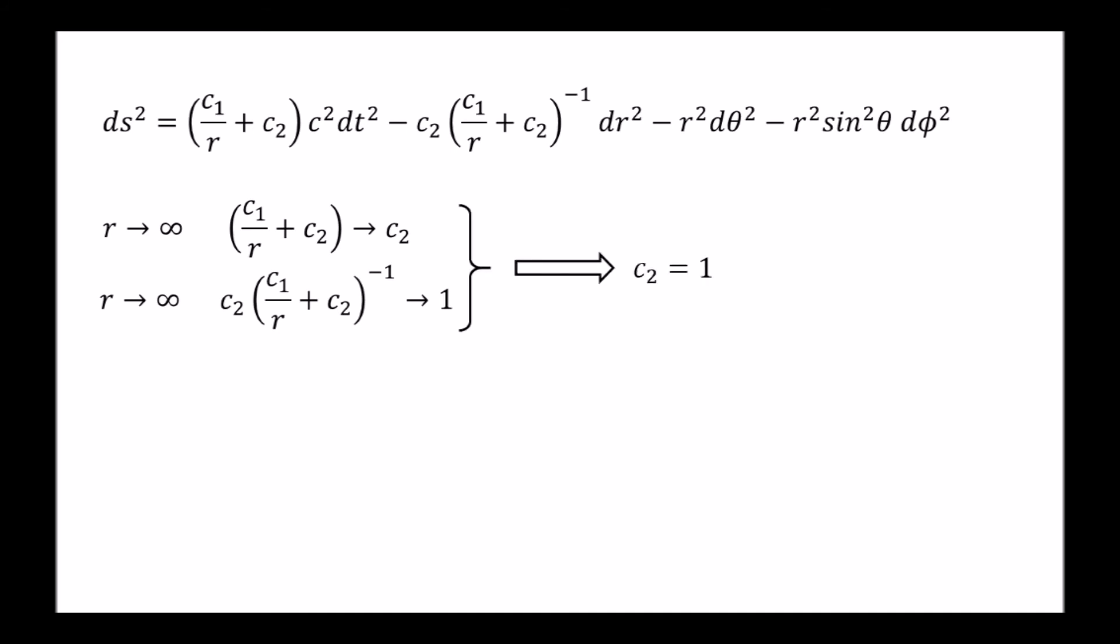The other constant can be determined from the condition that in the limit of weak fields, we must recover Newton's gravitation. In the previous video, we showed that in the weak field expansion of G00, H00 was equivalent to 2 phi over the speed of light squared, where phi was the Newtonian gravitational potential.